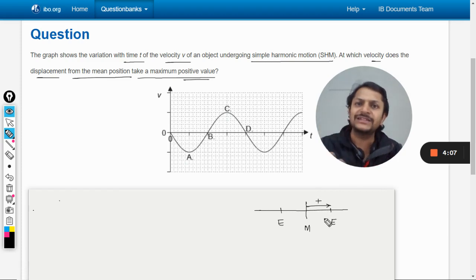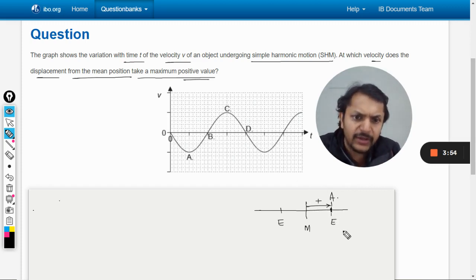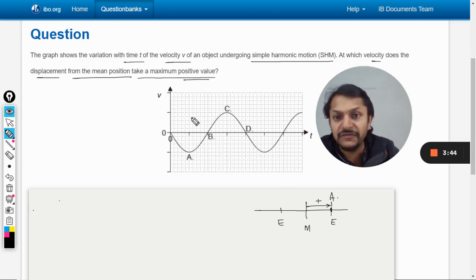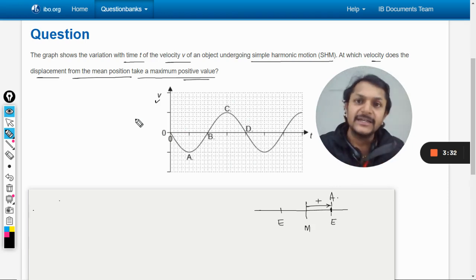Positive means we would be going towards this side because according to sign convention one side has to be taken positive. We always choose this as positive. Maximum displacement means they're talking about the amplitude here on the right hand side. Now we want to relate this with the graph that is given. The graph talks about velocity with respect to time, not displacement.